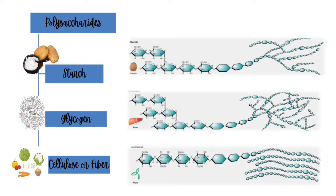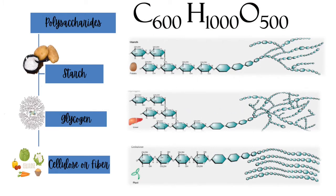If given 100 starts, the empirical formula can be as much as C600H1000O500, meaning 600 carbons, 1000 hydrogens, and 500 oxygens.